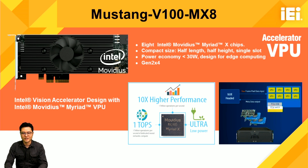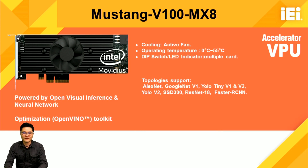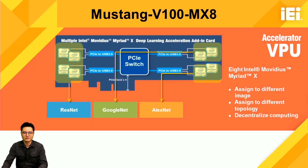It's ideal for edge computation. Other features include a wide temperature range, operating from 0 to 55°C. It also supports multiple PCIe cards and popular topologies such as AlexNet, U-Net, SSD, and YOLO. Another great feature of the Mustang V100MX8 is decentralized computing — it can distribute different VPUs for different video inputs, and even run different topologies on each VPU, providing very high flexibility for your applications.